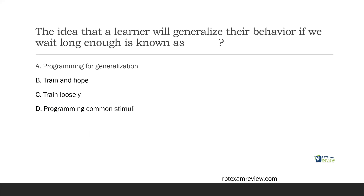The idea that a learner will generalize their behavior if we wait long enough is known as what? Is it programming for generalization, training and hoping, train loosely, or programming common stimuli? Programming for generalization is what you want to do — we're not just waiting. Training loosely and programming common stimuli are BCBA-level ideas where we actually program generalization into our plan. But just waiting around and hoping the behavior magically happens in other situations — that is called training and hoping. It's outdated and something we should not do anymore.